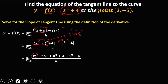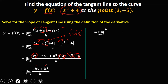Then combine like terms in the numerator. We have positive x squared and negative x squared — that's 0. Positive 4 and negative 4 — that's also 0. So we have the limit as h approaches 0 of 2hx plus h squared over h. Observe that in the numerator there is a common h in every term, so factor h outside, giving h times 2x plus h, over h.